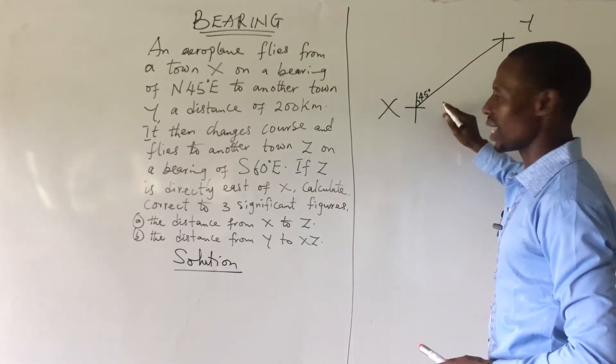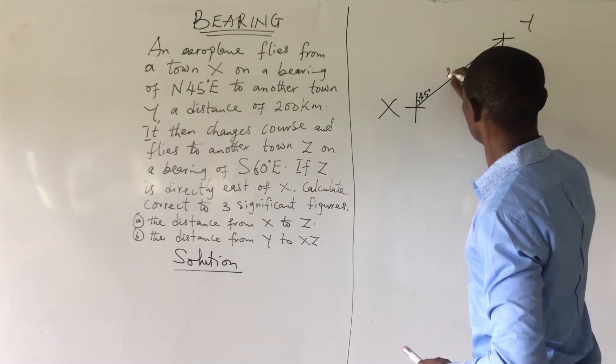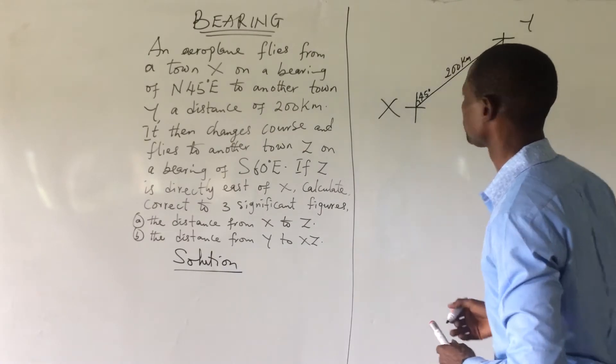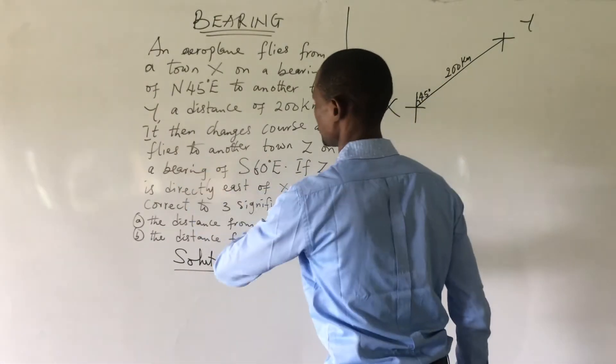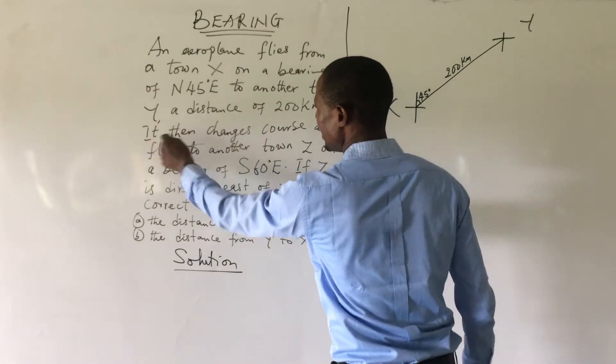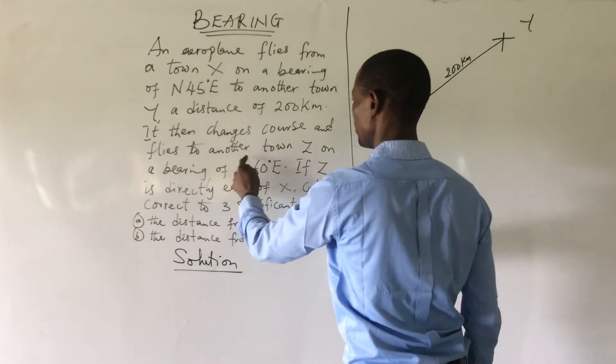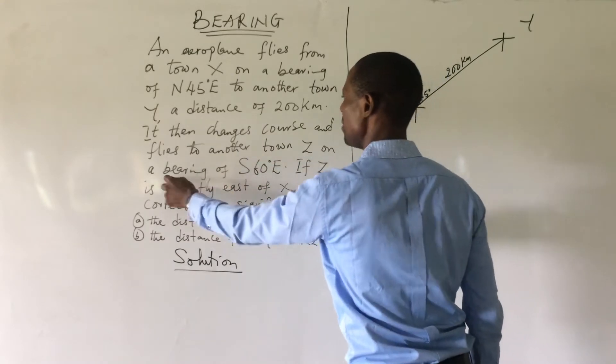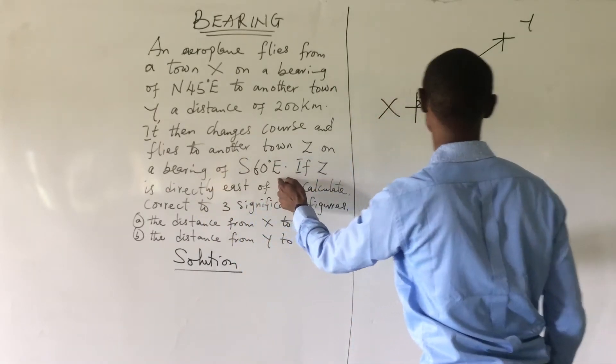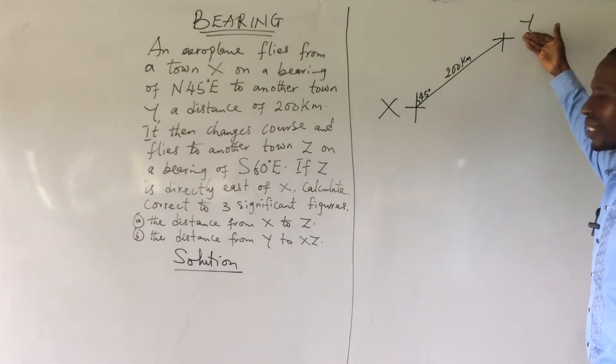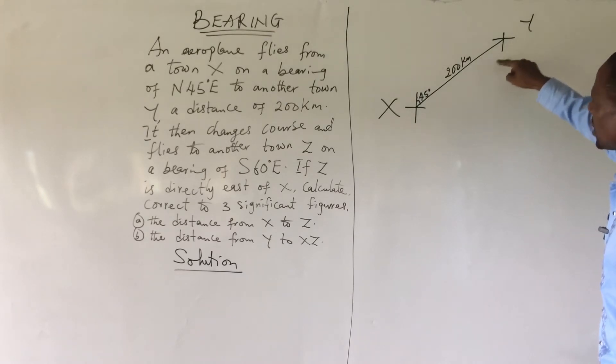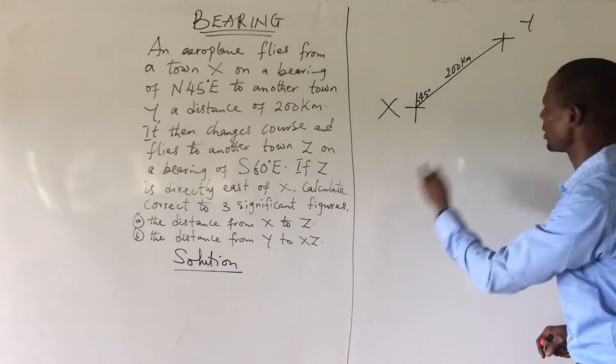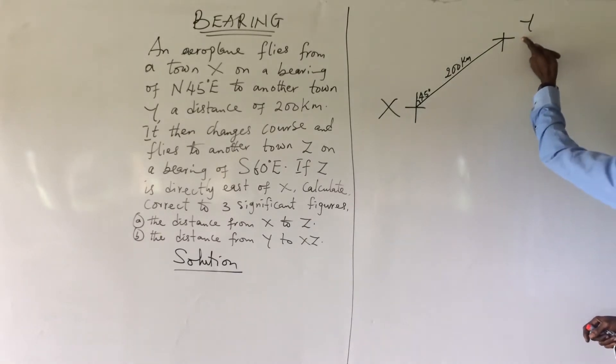Here we have our 45 degrees and the distance it covered is 200 kilometers. Now, we take the next sentence. It says it then changes course and flies to another town Z southeast on a bearing of 60 degrees southeast. This is where the plane is. It changed its course and flew to another town southeast.